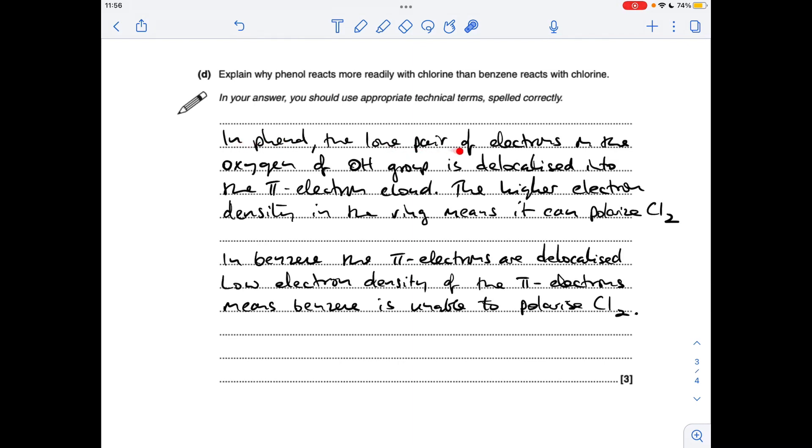So in phenol, the lone pair of electrons on the oxygen of the OH group is delocalised into the pi electron cloud. That gives the pi electron cloud a higher electron density, and it means it can polarise a chlorine molecule.